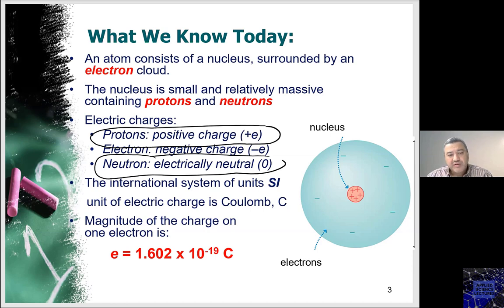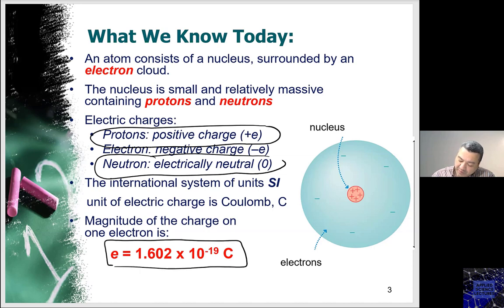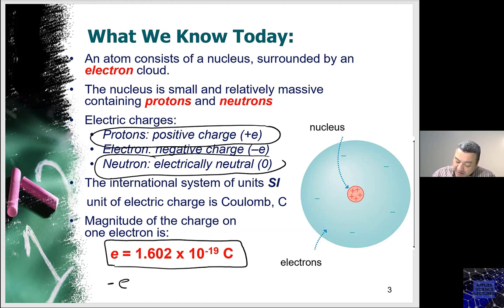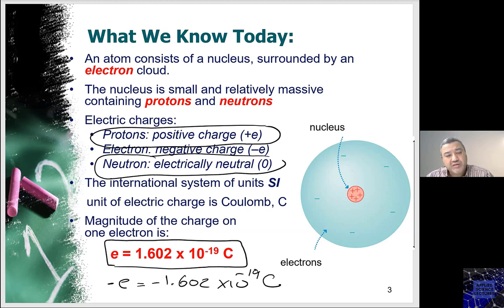The SI unit for electric charges is the Coulomb. The charge for a positive proton is 1.602 × 10 to the power of minus 19 Coulomb. The electron has also the same charge in magnitude, however it is negative — minus 1.602 × 10 to the power of minus 19 Coulomb. So a proton has the same charge magnitude as the electron, however the masses are completely different.